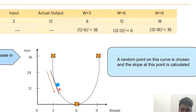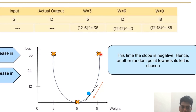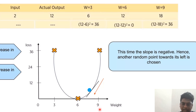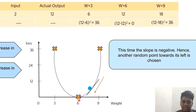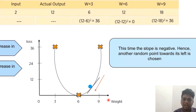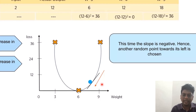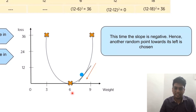At w = 3 we have a positive slope indicating loss of 36; we need to come down to 0. When the slope is positive, we must increase the weight — so 3 + 3 = 6, which gives the required output. On the other side, at w = 9 the slope is negative but we still need loss to decrease. When the slope is negative, we must decrease the weight from 9 toward 6.